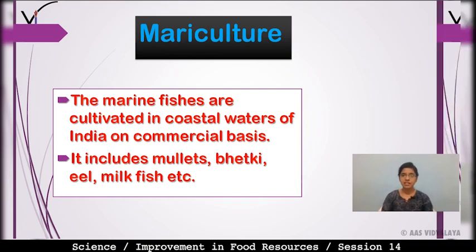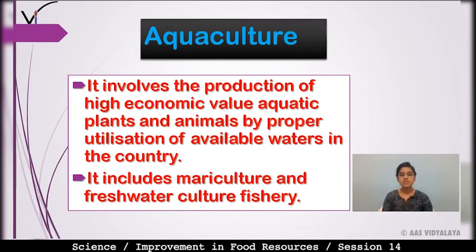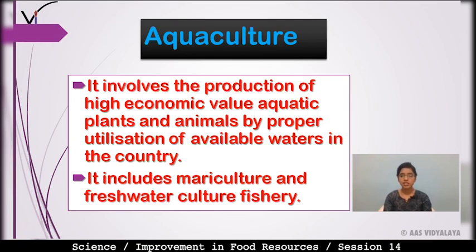Next is aquaculture. It involves the production of high economic value aquatic plants and animals by proper utilization of available water in the country. Aquaculture mein high economic value ke aquatic plants aur animals ka cultivation karte hain taaki country mein available water ka proper utilization ho paye. It includes mariculture and freshwater culture fishery.